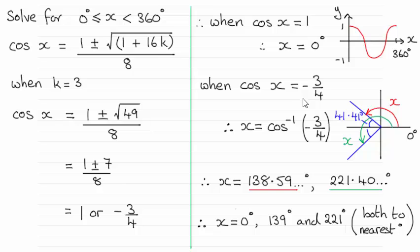Now when cosine x equals minus 3 quarters, well this is not an exact value. So what I've done to get x is take the inverse cosine of minus 3 quarters. I've also drawn a quadrant diagram. So I'm assuming you're familiar with quadrant diagrams. If not, do check them out on my website.